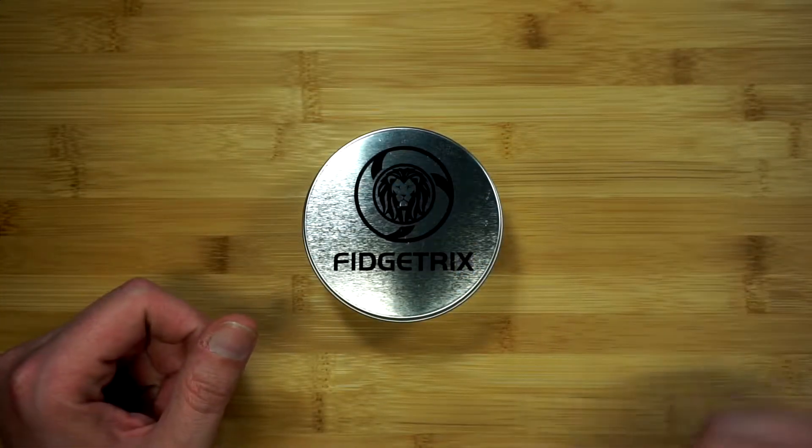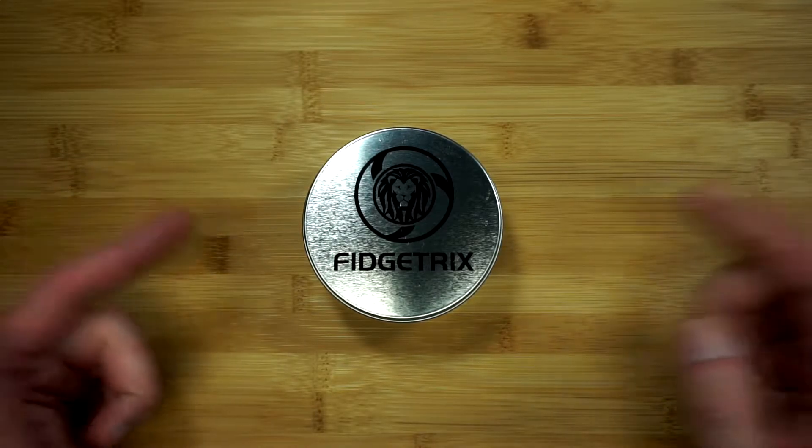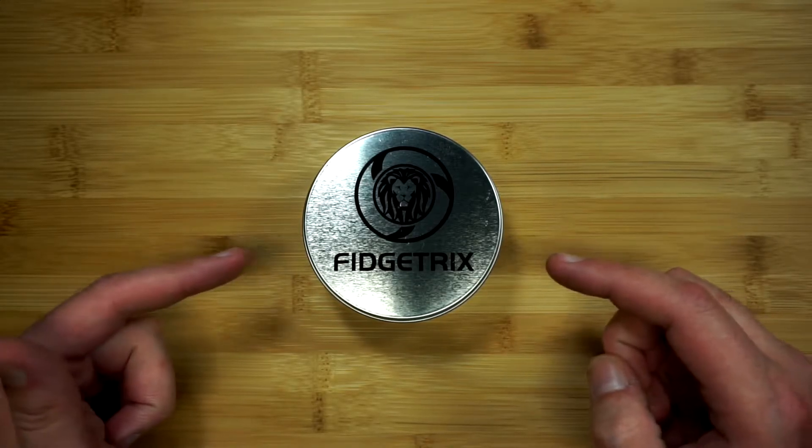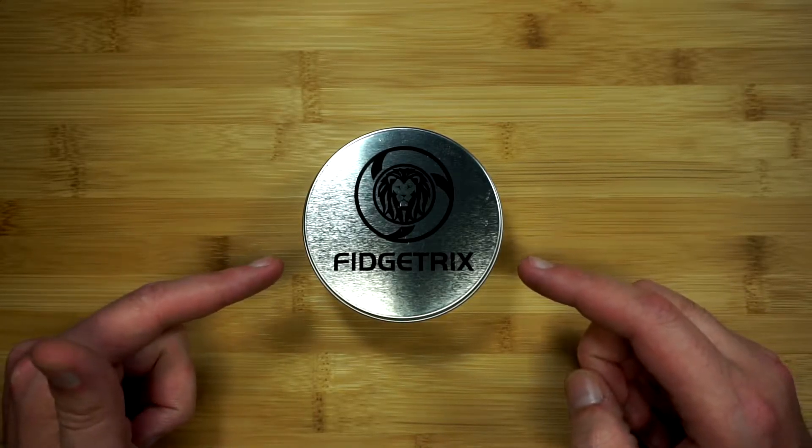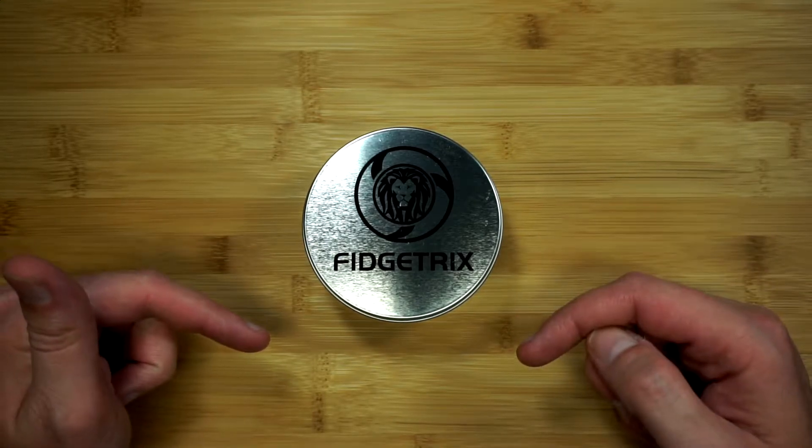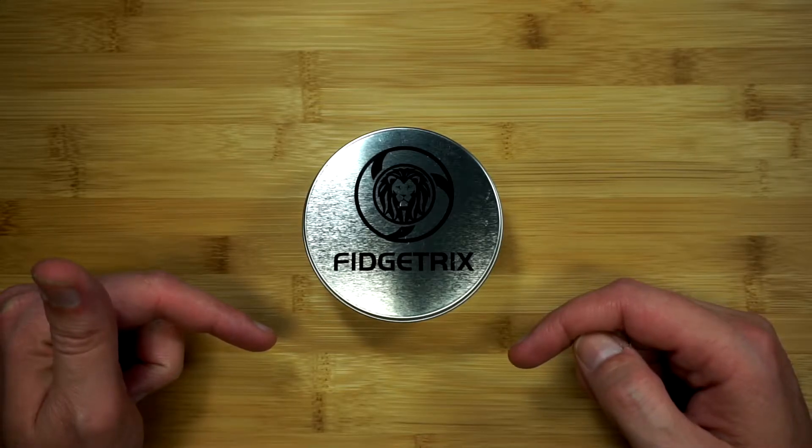What's going on everybody? I hope everybody has been having a great week. Fourth of July is creeping up and right now we're going to be taking a look at the Vortrix from Fidgetrix. They have a website which is Fidgetrix.com and they also sell on Amazon. If you check down in the description there'll be links to both along with a discount code for the website.